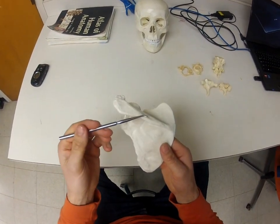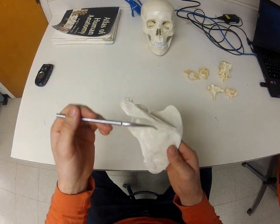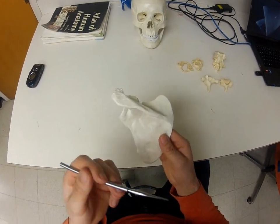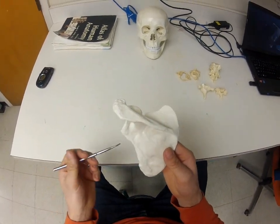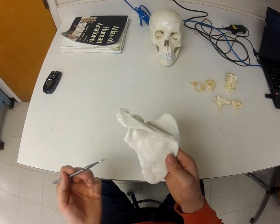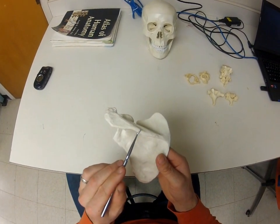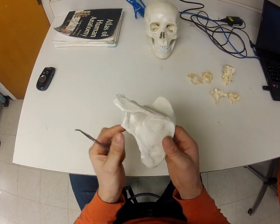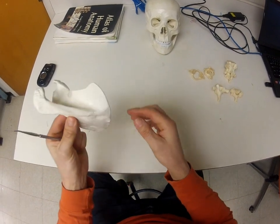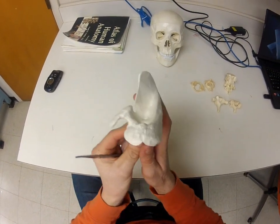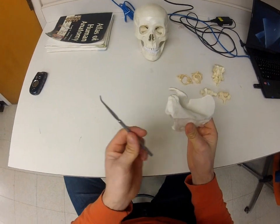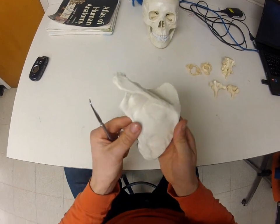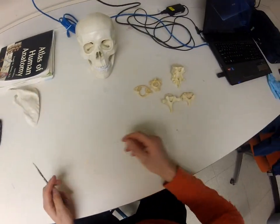To orient the scapula, you need two directional features. The spine of the scapula always points posteriorly and the acromion process always points laterally. Using these two references, this particular scapula goes on the left side of the body - if you tried to put it on the right, the acromion process would be pointing medially instead of laterally.